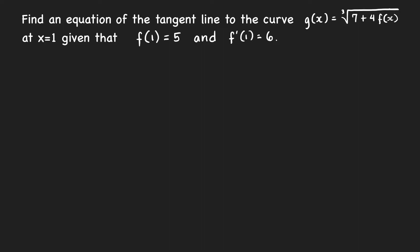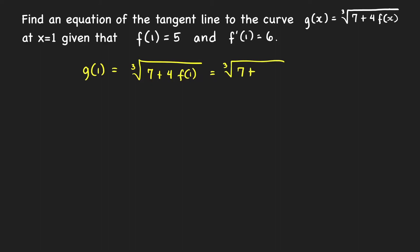To find an equation of the tangent line we need to know the x and y coordinates of the tangent point and the slope at that point. We know the x coordinate is x equals 1. The y coordinate is G of 1, which equals the cube root of 7 plus 4 times f of 1. Since f of 1 is 5, that is the cube root of 7 plus 20, which is the cube root of 27, equal to 3. Therefore our tangent point is (1, 3).